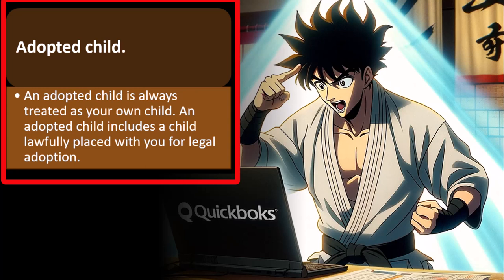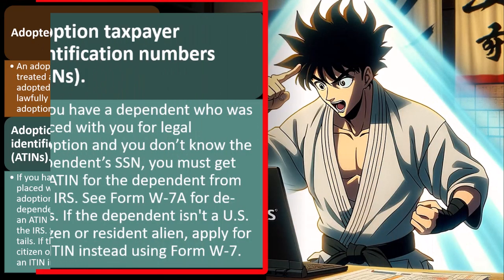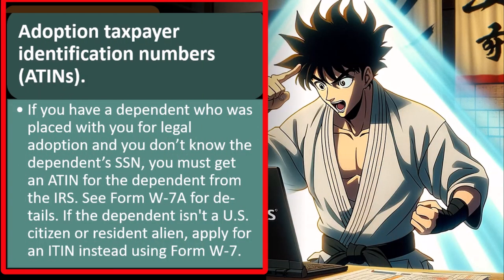An adopted child is always treated as your own child. An adopted child includes a child lawfully placed with you for legal adoption. If you have a dependent placed with you for legal adoption and you don't know the dependent's SSN, you must get an ATIN (Adoption Taxpayer Identification Number, A-T-I-N) from the IRS — see Form W-7A for details. If the dependent isn't a US citizen or resident alien, apply for an ITIN instead using Form W-7.